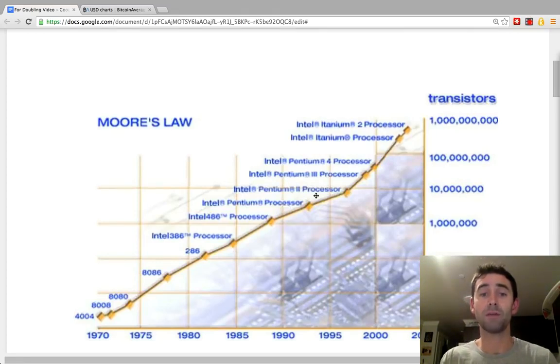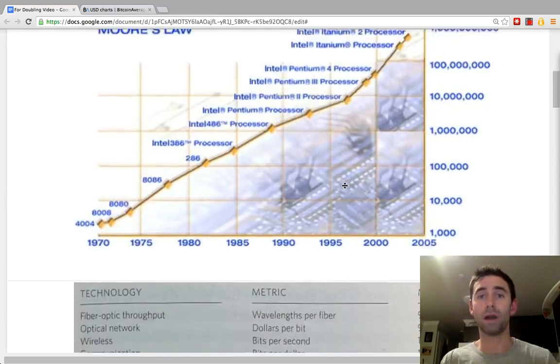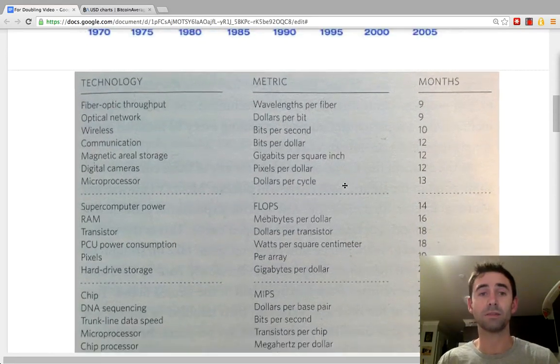When you graph the number of transistors per chip on a log scale, you get this almost straight line. Actually, a lot of technologies grow on exponential curves, so they have straight lines.